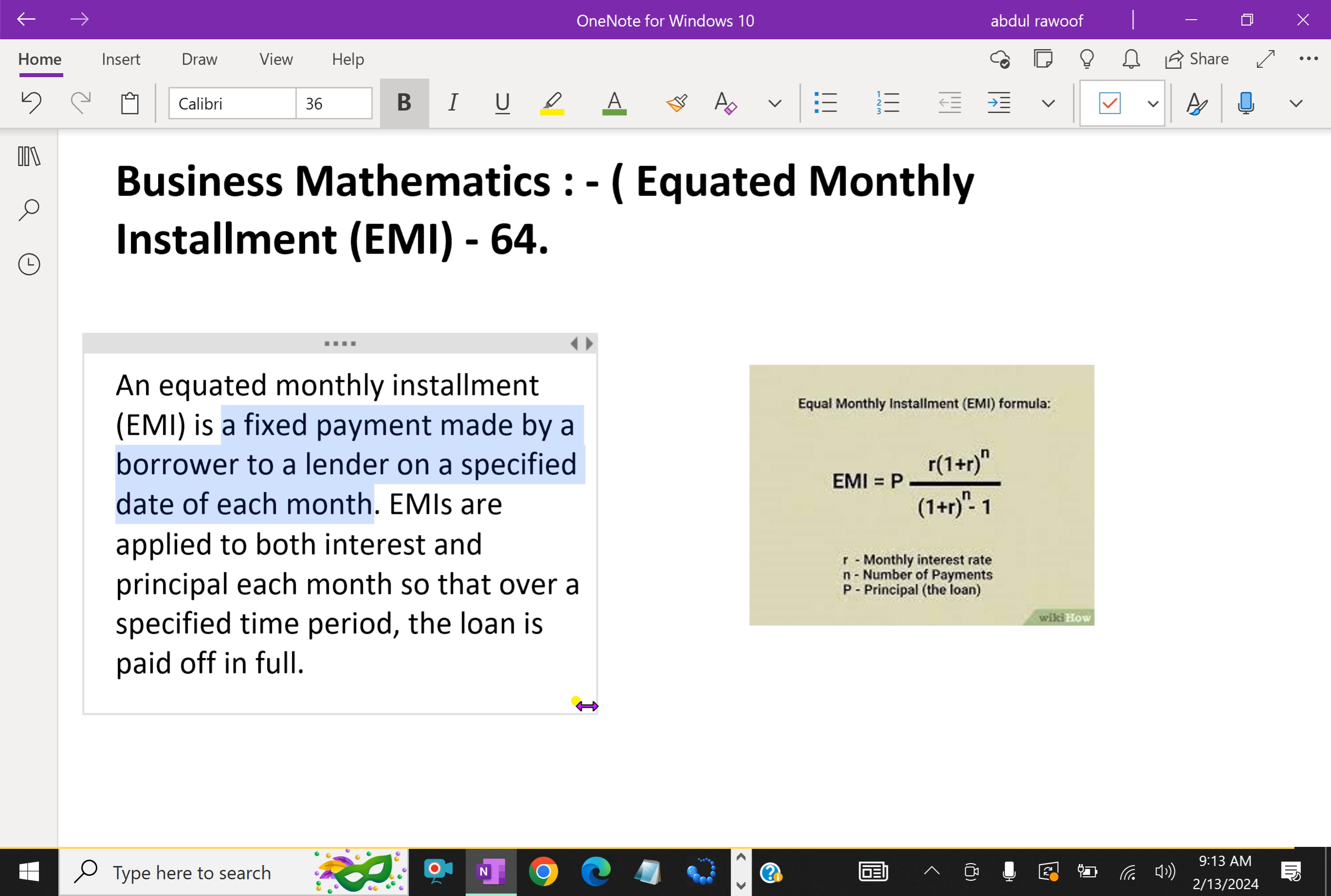When a person gets a loan from a bank to buy a house for a fixed tenure, he has to pay EMI, Equated Monthly Installment. EMI is the term used for the monthly payment made by a borrower to the lender towards interest and principal money borrowed.